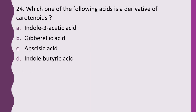Question 24. Which one of the following acids is a derivative of carotenoid? Indole-3-acetic acid, gibberellic acid, abscisic acid, or indole butyric acid. The correct answer is option C — abscisic acid is a derivative of carotenoids.